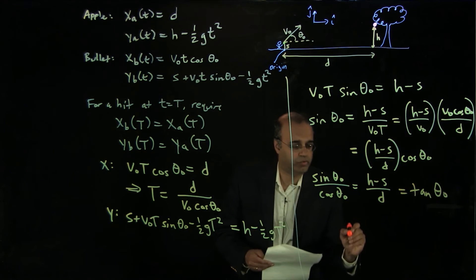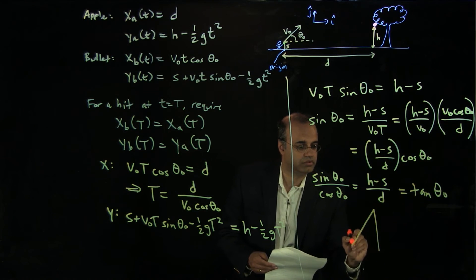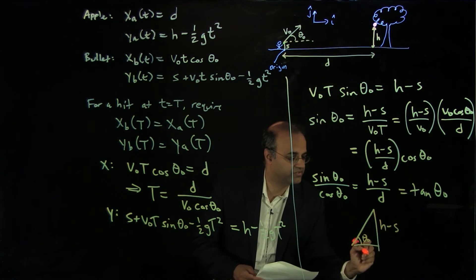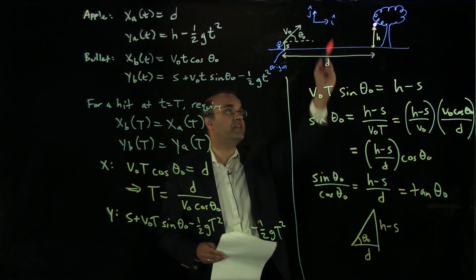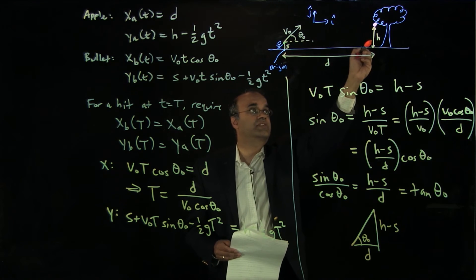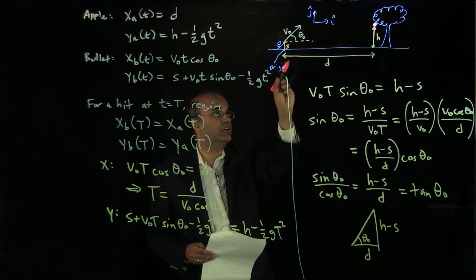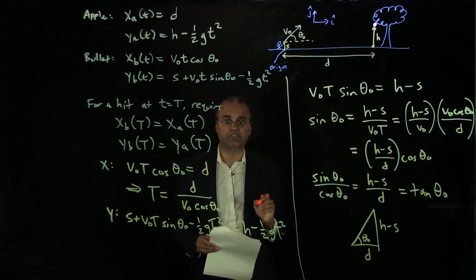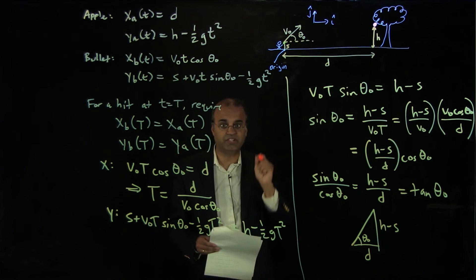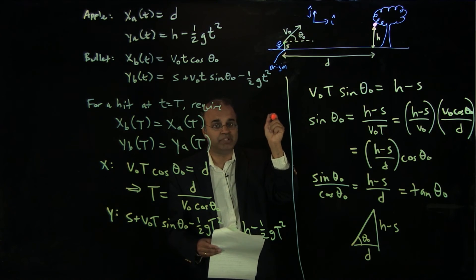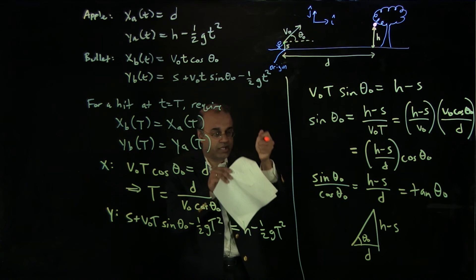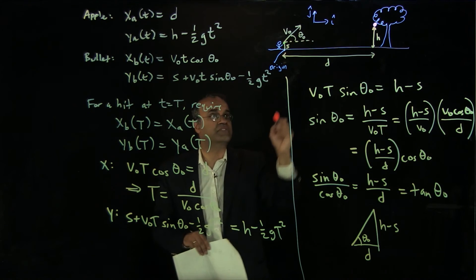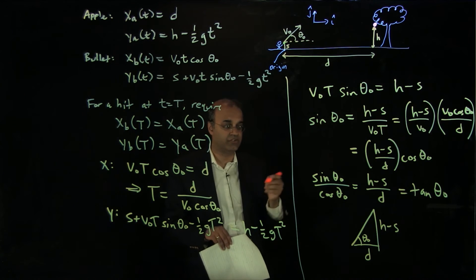If we draw a right triangle where θ₀ is the angle, the opposite side is h − s and the adjacent side is d — the same geometry as the triangle from the launch point to the apple's initial position. So θ₀ is simply the angle to the location of the apple just before it drops. The correct strategy is to aim directly at the apple. Both the bullet and the apple fall vertically at the same rate, which guarantees a collision.